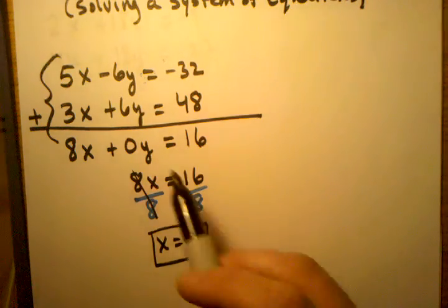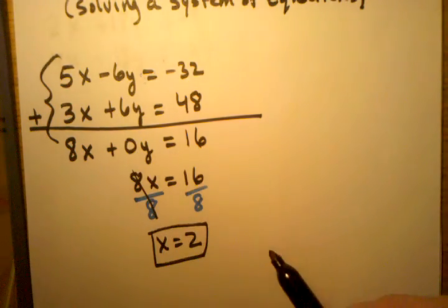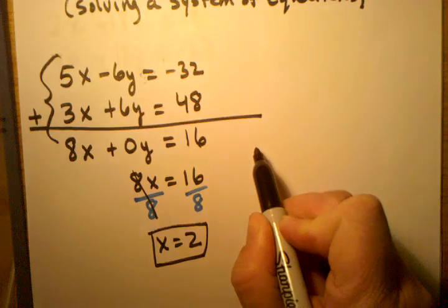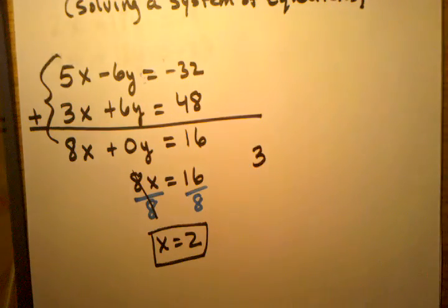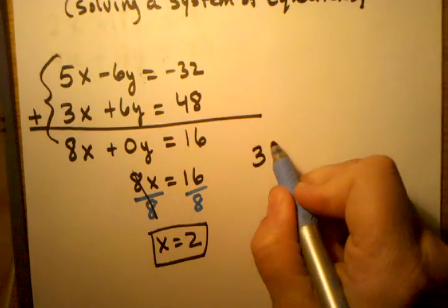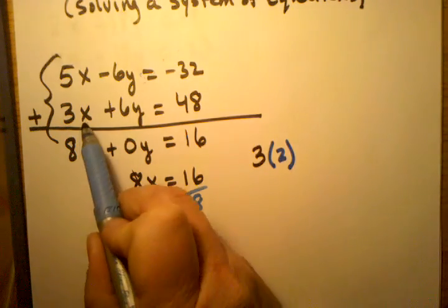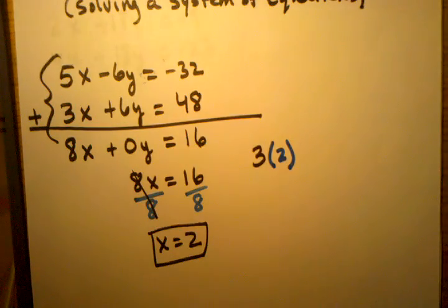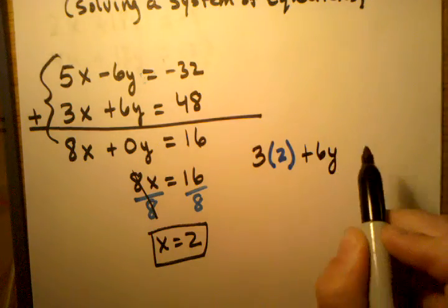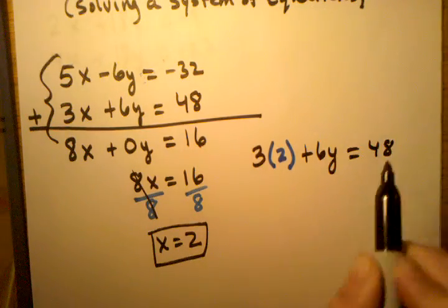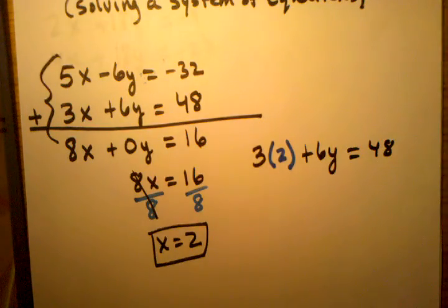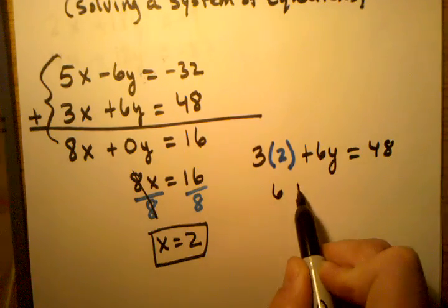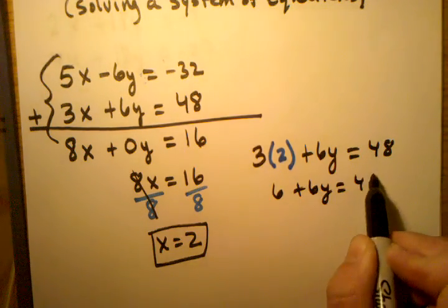So I'm going to pick, for the heck of it, I'll pick the second one. So I'm going to rewrite the equation out. But now I'm going to substitute in 2 for x. So instead of x here, I'm putting 2 in for x. And then I'm going to add 6y equals 48 just to continue writing the equation out. Now if I start solving this, I'll end up with 6 plus 6y equals 48.